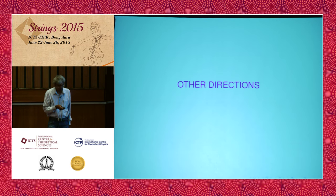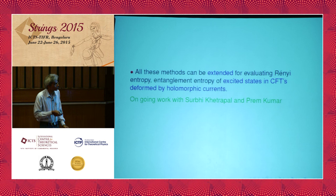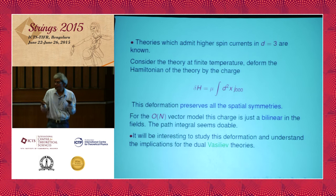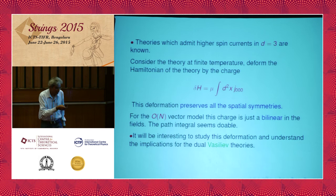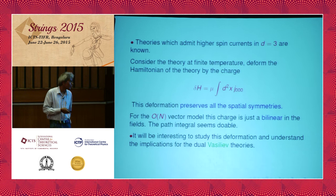Future directions include extending these methods to Rényi entropy and entanglement of excited states, which is ongoing work with a student and Prem Kumar. Also, while this work was restricted to two dimensions, there are higher spin currents in D equals 3. If one wants to preserve all spatial symmetries, there is a specific charge to deform with. For the O(N) vector model this is just a bilinear in fields and the path integral seems doable. It would be interesting to study this deformation and understand its implications for Vasiliev theory.